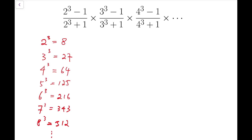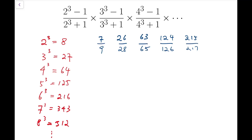The fractions should be 7 over 9, 26 over 28 — not going to simplify yet — 63 over 65, 124 over 126, 215 over 217, 342 over 344, 511 over 513, and so on.